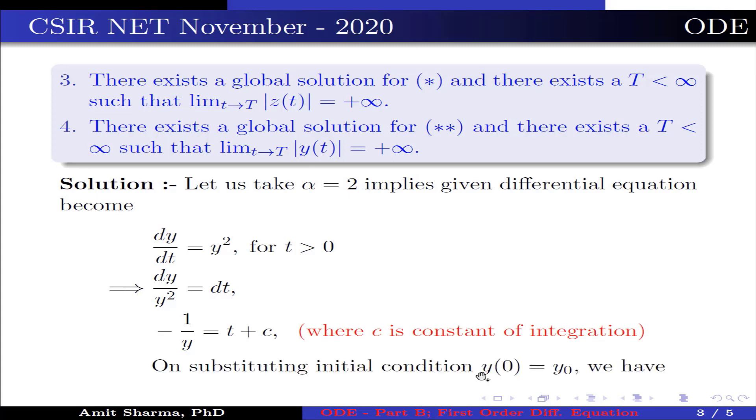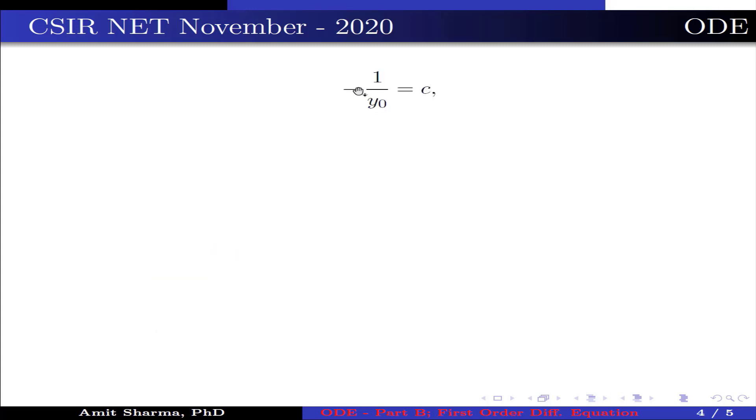Now on substituting initial condition y(0) = y₀, we have -1/y₀ = c. This implies -1/y = t - 1/y₀. This further implies y = y₀/(1 - y₀t).